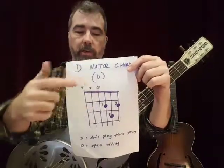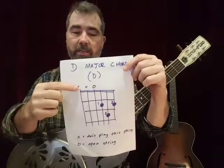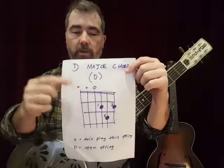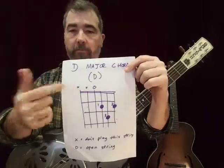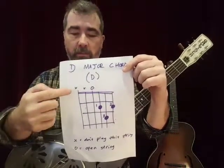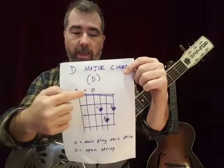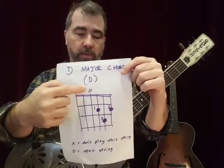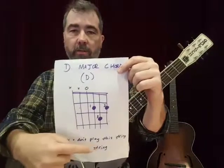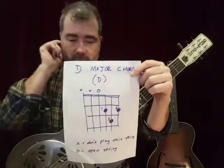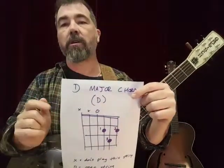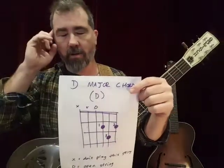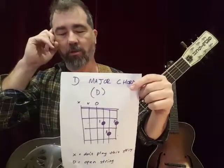If there's an X above a string when you find chord charts, you don't play that string. So we don't play the low E string and we don't play the A string. We have an open D string. And then we've got this little triangle shape. If you can associate a chord with a shape — for me, a D chord shape is a little triangle.